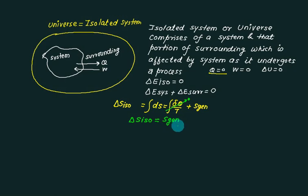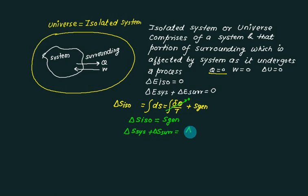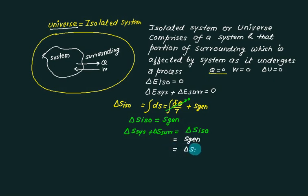We have successfully defined the term S_generation. Since ΔS_isolated itself consists of system and surrounding, we have: ΔS_system + ΔS_surrounding = ΔS_isolated = S_generation. Many people also call this ΔS_universe. So ΔS_system + ΔS_surrounding = S_generation = ΔS_universe — they are one and the same term.